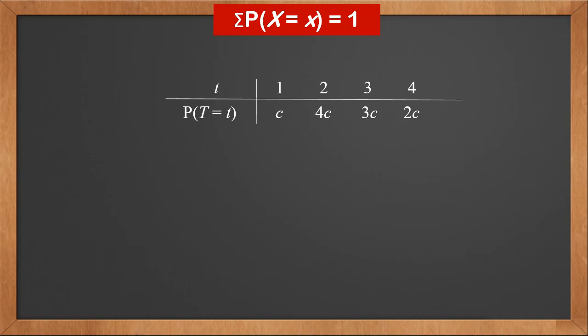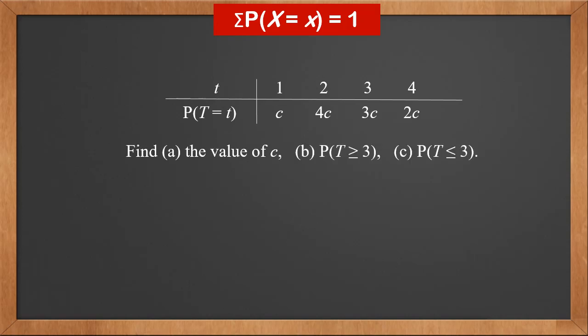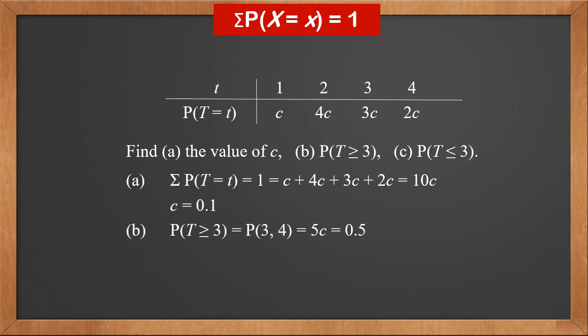Given a probability distribution table, find: (a) the value of c, (b) P(T ≥ 3), and (c) P(T ≤ 3). Since all probabilities add to 1, we get c + 4c + 3c + 2c = 1, so c = 0.1. P(T ≥ 3) is P(3) and P(4), which is 5c = 0.5. P(T ≤ 3) is P(1), P(2), and P(3), which is 8c = 0.8.